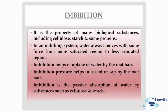Imbibition is the property of many biological substances including cellulose, starch, and some proteins. In an imbibing system, water always moves with some force from a more saturated region to a less saturated region. Imbibition helps in the uptake of soil water by the root hair. Imbibition pressure helps in the ascent of sap by the root hair.